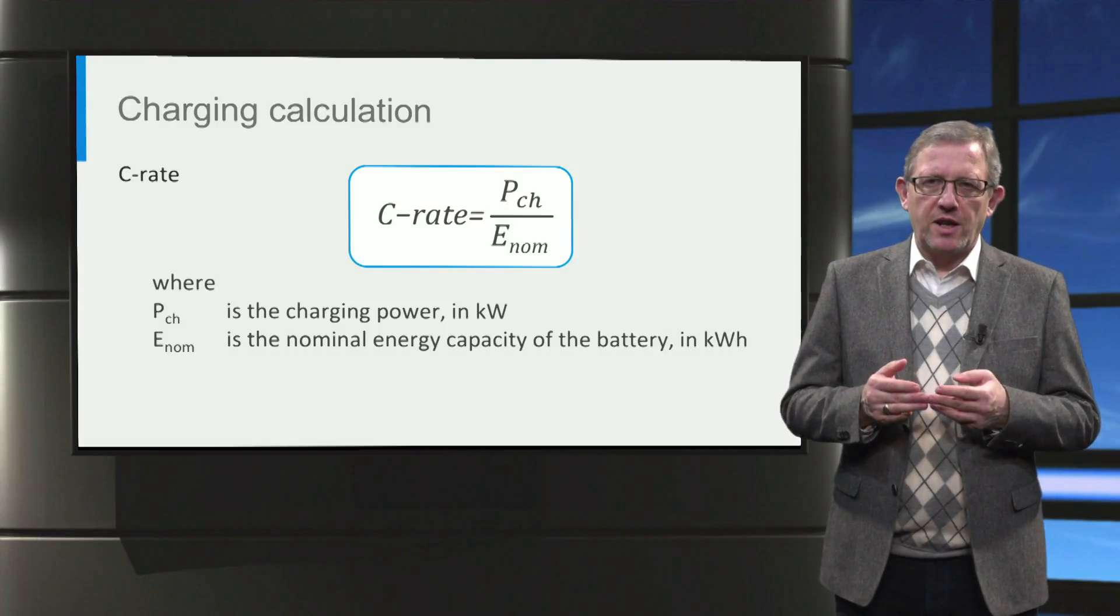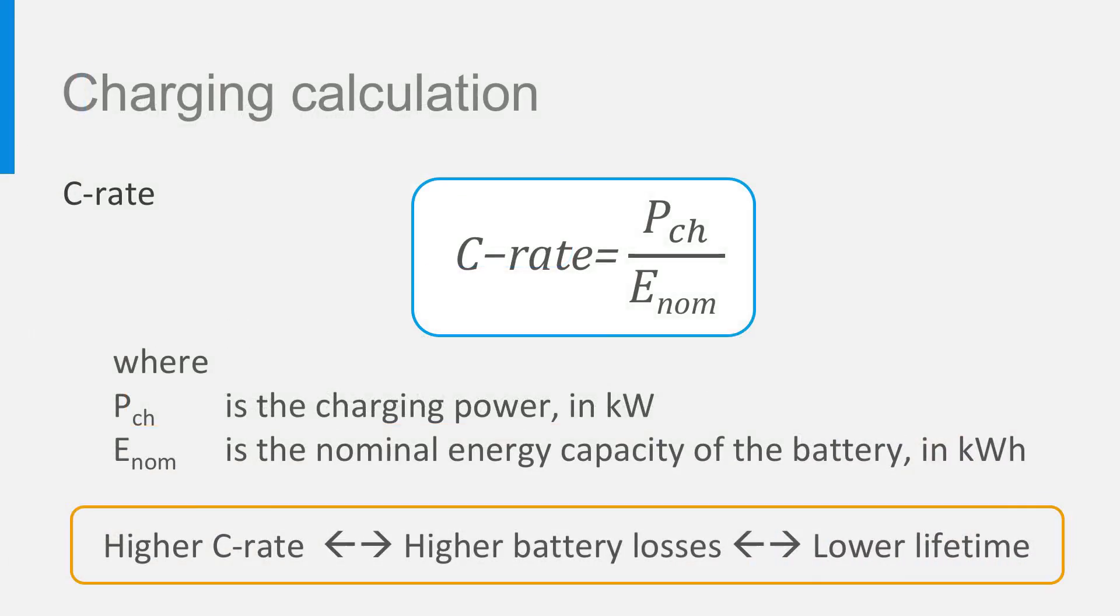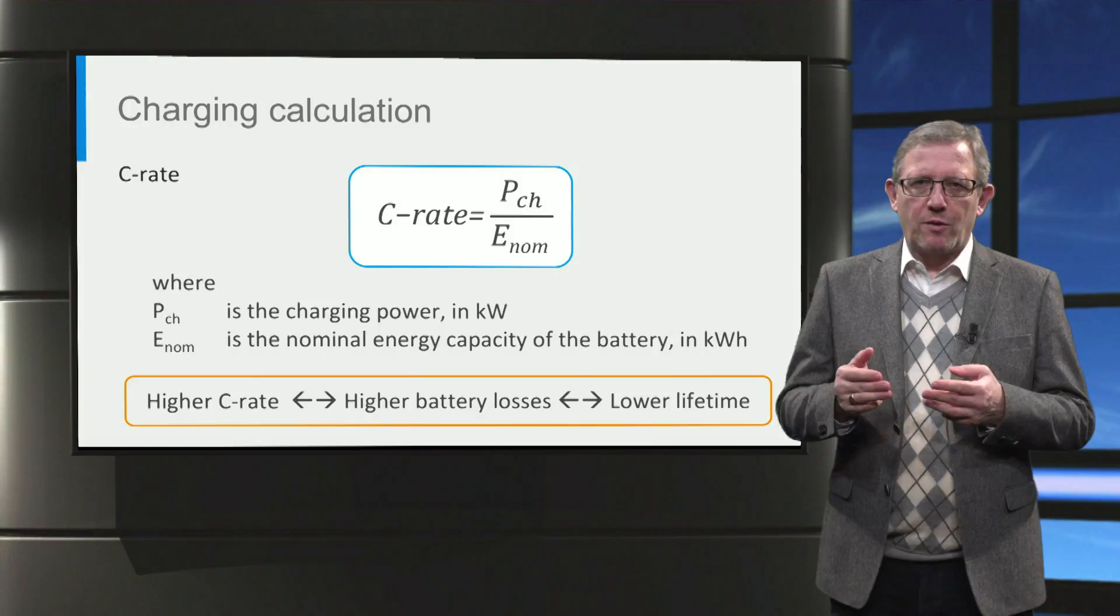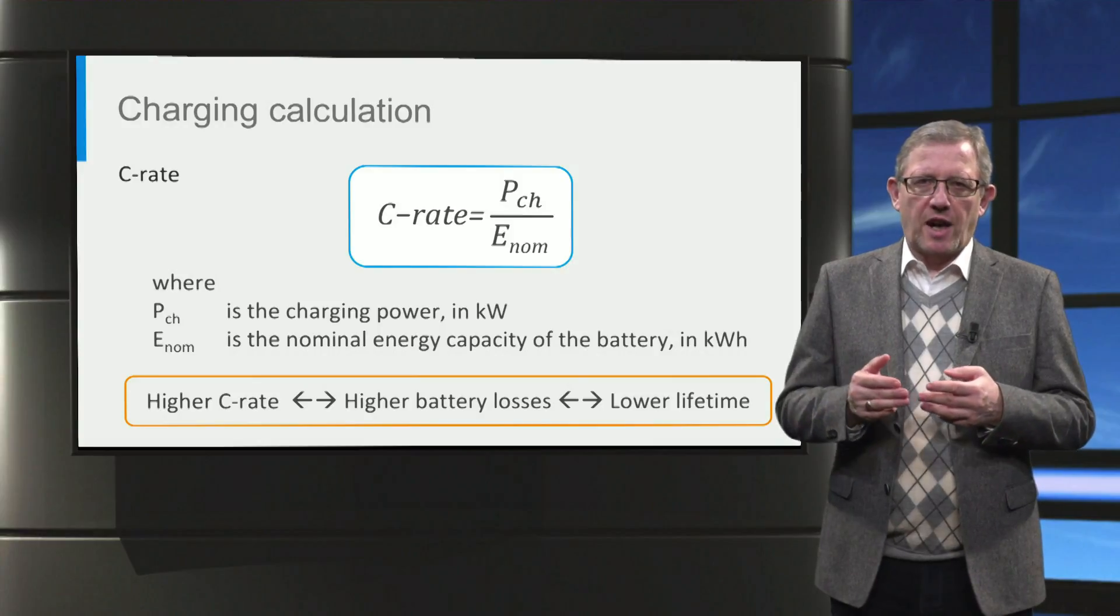The importance of C-rate is that as the C-rate increases, battery losses and temperature of the battery increases as well. This eventually reduces the lifetime of the battery. Hence, to ensure the long lifetime of the battery, lower C-rates are preferred.